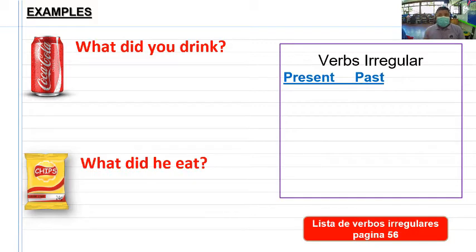Bien, los verbos irregulares se identifican porque ellos cambian completamente su escritura. Veamos los verbos, algunos verbos que puse de ejemplo. El verbo buy, comprar, su pasado es bought.